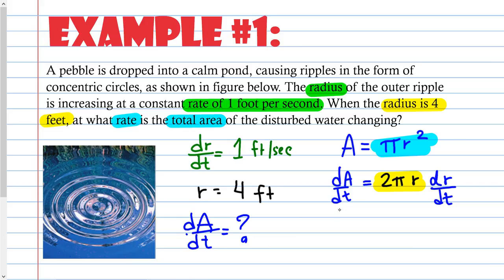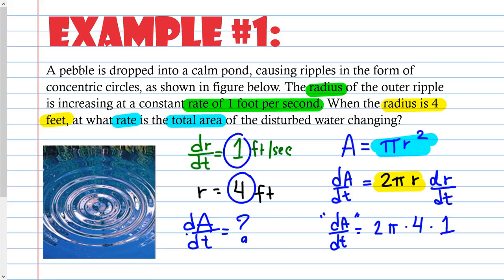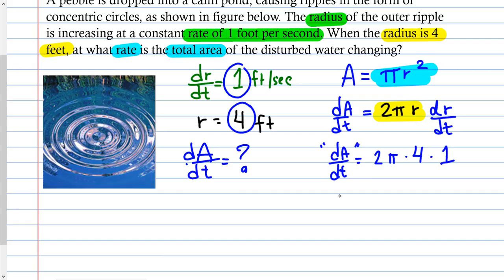I'm looking for dA/dt, so I don't have anything to plug in for that — that is what I'm searching for. Two times pi, then r — I have r, it's 4. So I plug that in. dr/dt I also have — it's 1. So I plug that in and simplify. dA/dt = 2 × 4 × 1 = 8. I'm going to leave it in terms of pi. The rate of the total area is 8π feet squared per second.